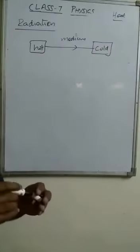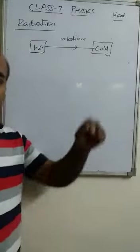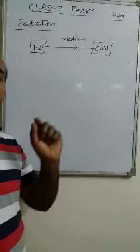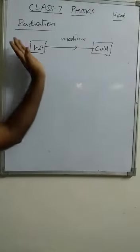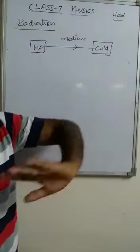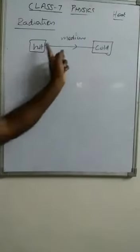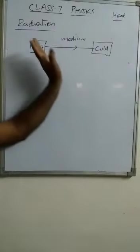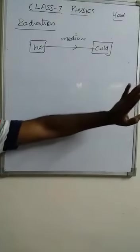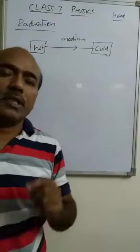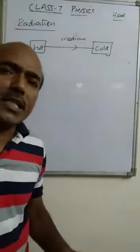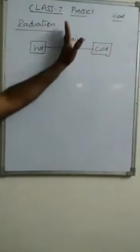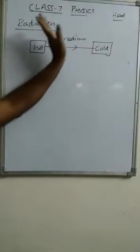In conduction, heat was transferred through the material; in convection also it was transferred through the material. But here, the space between the hot object and the cold object will not be affected — meaning no medium is required for the transfer of heat. So radiation is the phenomenon in which heat is transferred from hot to cold without affecting the medium in between them.